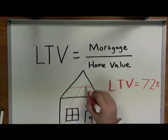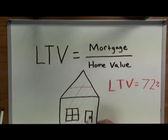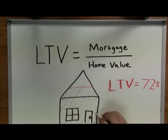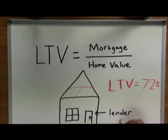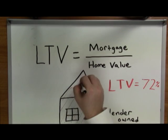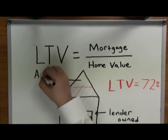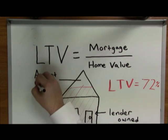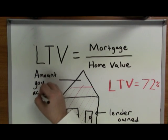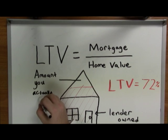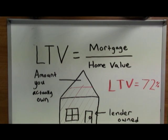If you have an LTV of 72%, then the lender has claim to 72% of the value of your home. Conversely, your equity — or 100% minus your LTV — is the percentage of your home that belongs to you.